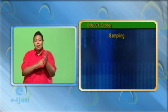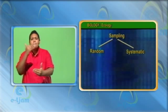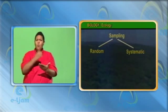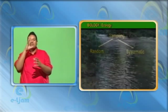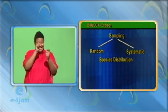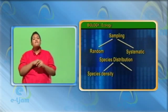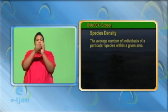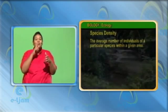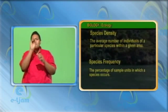Sampling may either be random or systematic. From the samples collected, one is able to estimate the number of organisms within a given area of ground or volume of water. This is the species distribution. Species distribution involves species density and species frequency. Species density is the average number of individuals of a particular species within a given area. Species frequency is the percentage of sample units in which a species occurs.